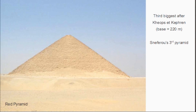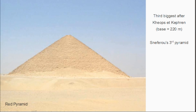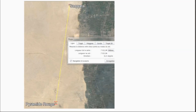Now let's come to the red pyramid. It has a slope of 43.6 degrees — one of the least sloped pyramids — with a very big base of 220 meters. It's also apparently built by Sneferu, who was a very big pyramid builder. What's the red pyramid's relationship to Saqqara? 8.13 degrees. Recognize that? It's the inverse tangent of 1 over 7 — a seven-fold square.